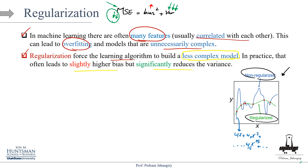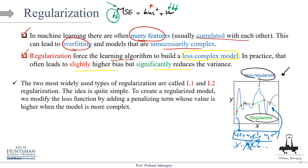Regularization forces the coefficients of less-important features to be equal to zero or sends them toward zero, keeping the model simpler — like w₃x³. This is the green regularized model: less complex by adding a little bias and reducing the variance a lot. The two most widely used regularizations are L1 and L2 norm. To create a regularized model, we modify the loss function by adding a penalty term — also called a shrinkage term — whose value is higher when the model is more complex.